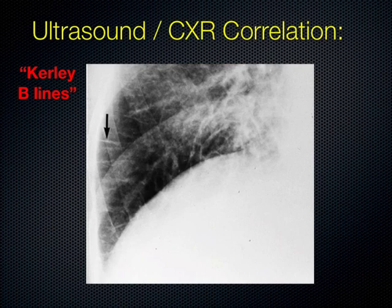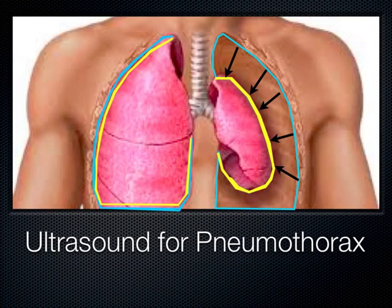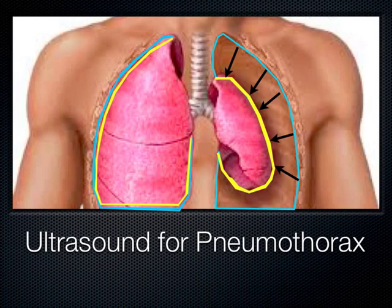We're going to move on to ultrasound of pneumothorax. Normally your lung is inflated like a balloon — covered with the visceral pleura — and the chest wall is covered with the parietal pleura. Normally they're adhered together, almost like a suction with a very thin layer of fluid between them. If any air gets in between those two layers, the lung will just collapse — you lose the suction. A pneumothorax is when your lung has collapsed and air has entered the chest cavity: pneumo meaning air, thorax meaning chest.